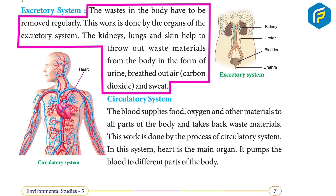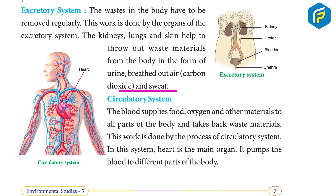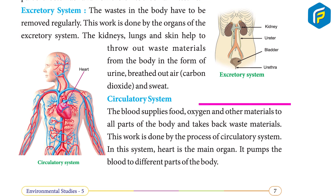The excretory system: waste in the body must be removed regularly. This work is done by the organs of the excretory system. The kidneys, lungs, and skin help to throw out waste materials from the body in the form of urine, breathed-out air (carbon dioxide), and sweat.